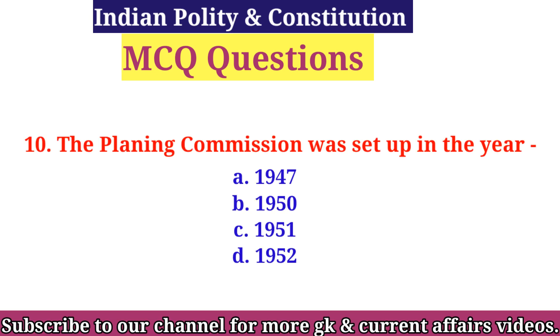Question 10: The Planning Commission was set up in the year — Option A: 1947, B: 1950, C: 1951, D: 1952. The right answer is Option B, 1950.